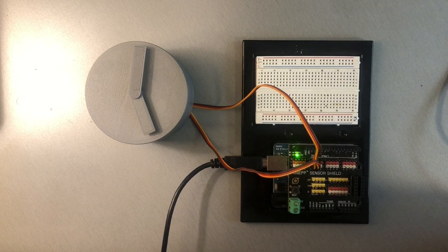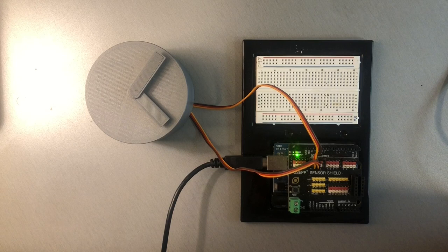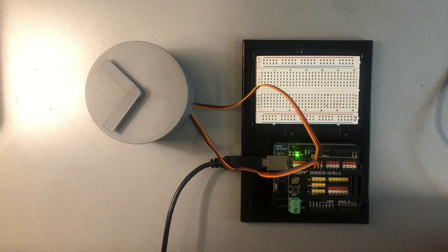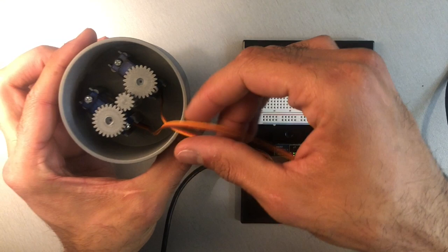Also noticed that the arms weren't moving back and forth a full 360 degrees, and this just means that the ratio between the gears on the arms and the larger gears on the servos needs to be adjusted.